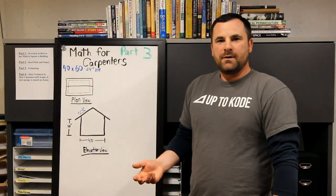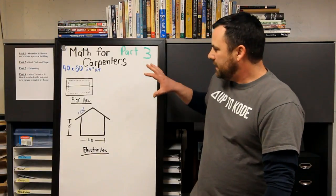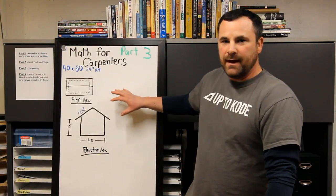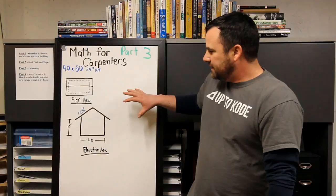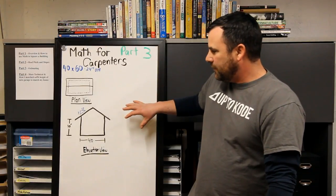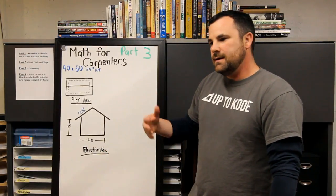We're in part three of my Math for Carpenters series, and we're going to get a little more into detail about estimating, the math that it takes to figure out everything beforehand to be able to quote properly and do takeoff.